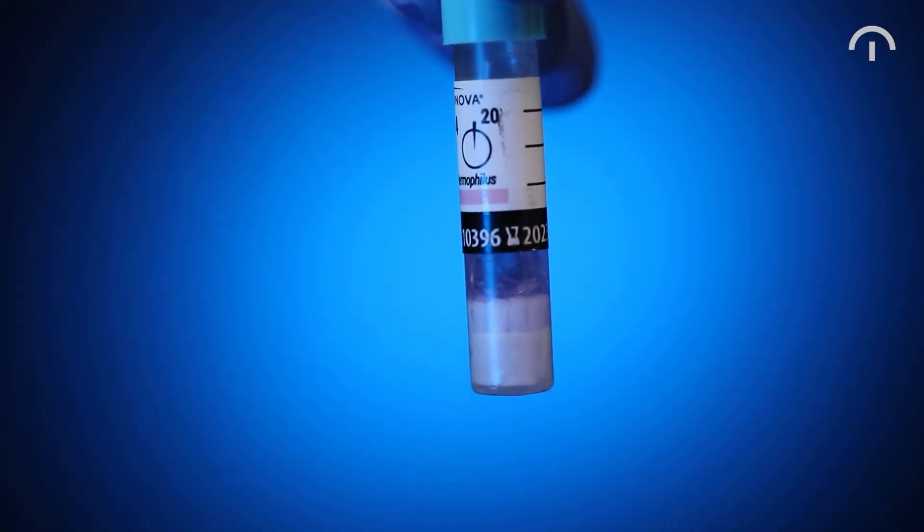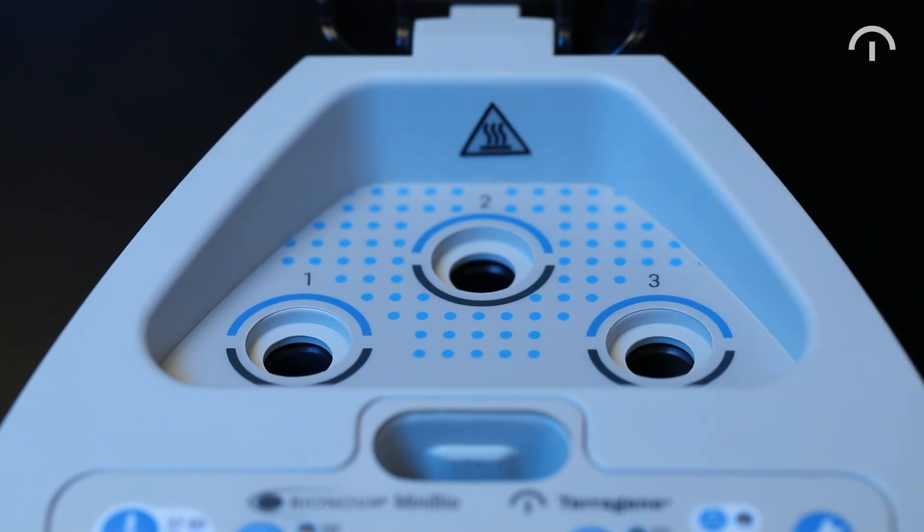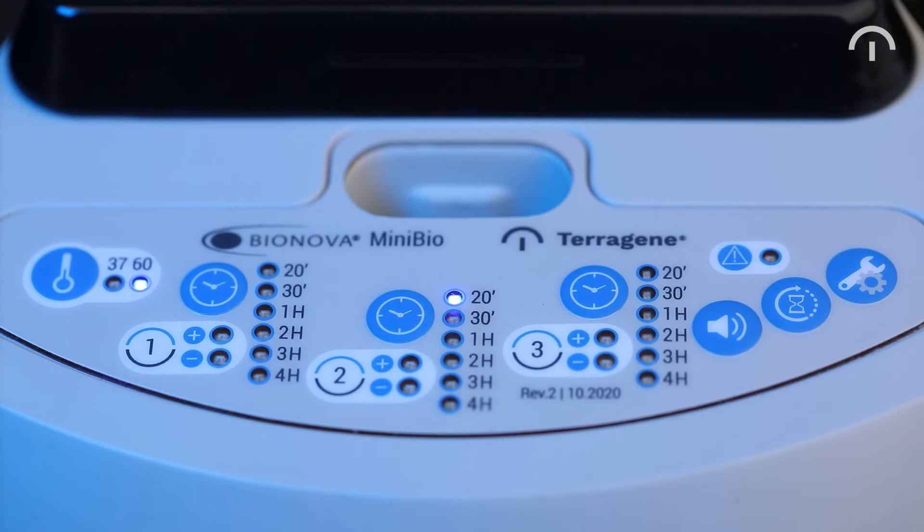Shake the Biological Indicator vigorously in order to ensure that the culture medium gets in contact with the spore carrier. Place the Biological Indicator in the selected position. Close the lid and wait for the result.